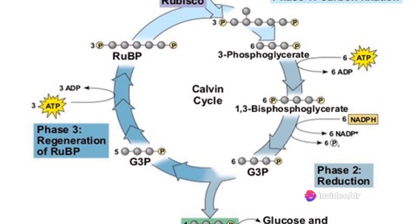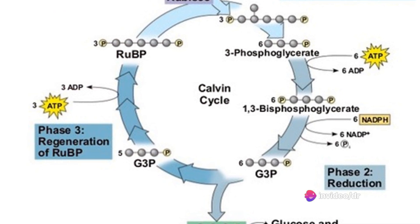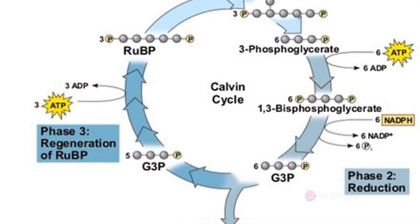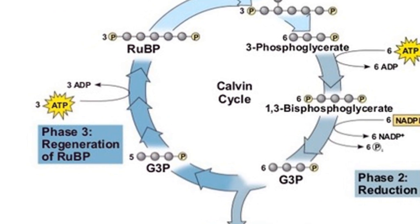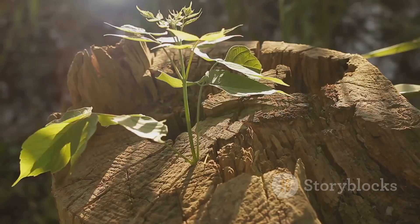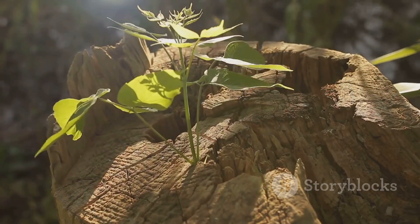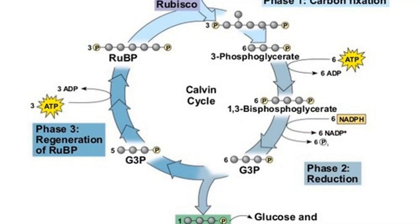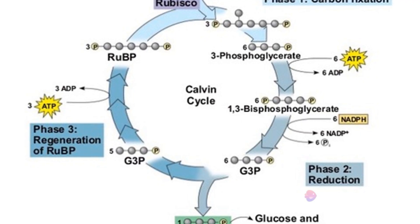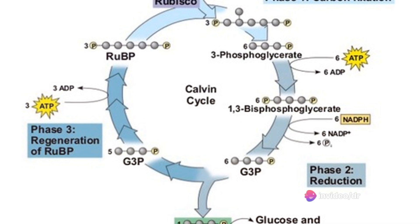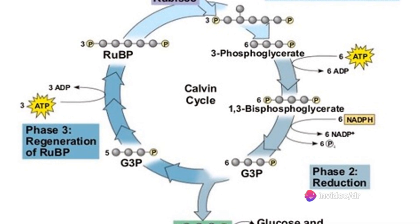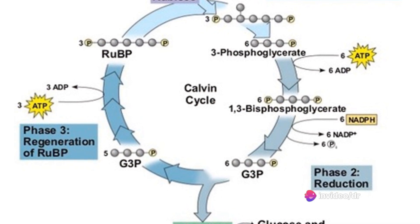In the third step, called the regeneration step, the remaining G3P molecules are used to recreate ribulose bisphosphate (RuBP), the starting molecule, which enables the system to prepare for the carbon fixation step again. ATP is again used in the regeneration of RuBP.